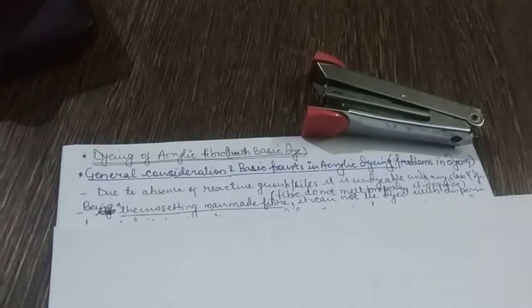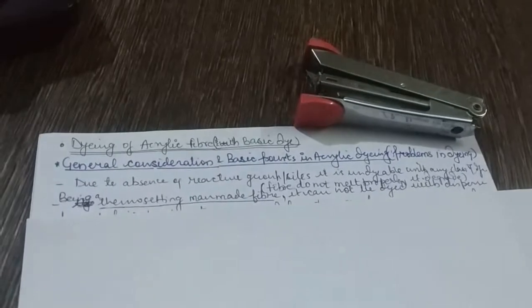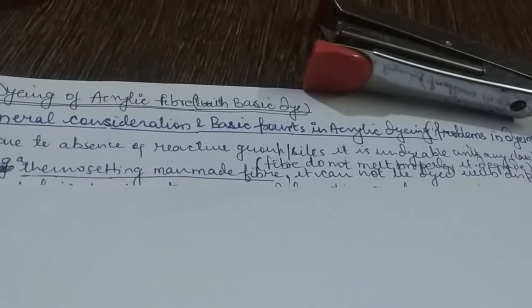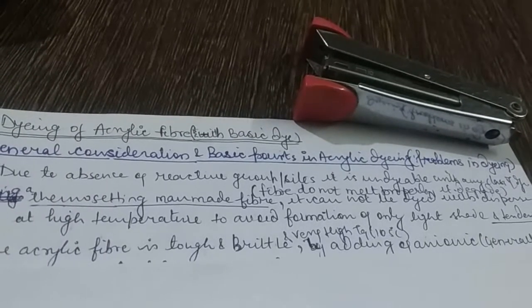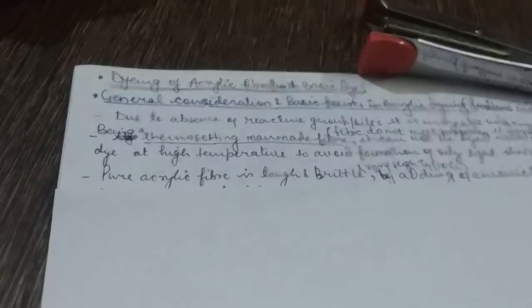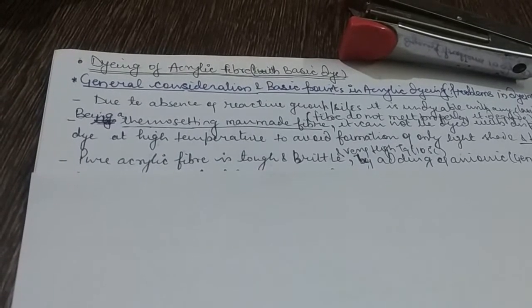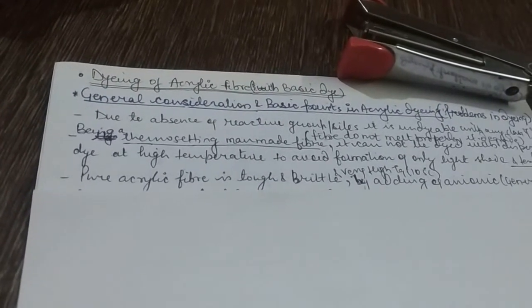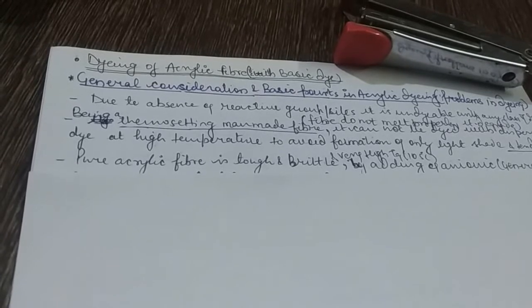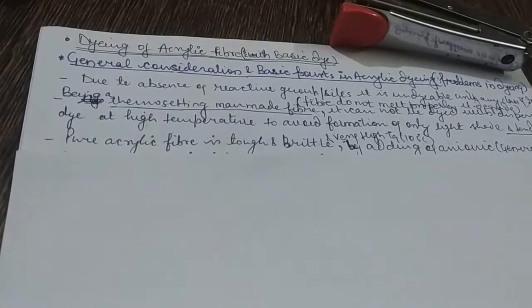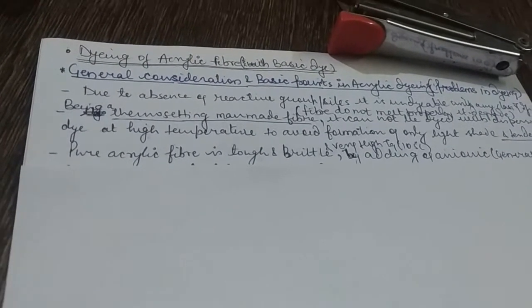Being a thermostatic man-made fiber means the fiber does not melt properly — it degrades when it comes into contact with heat. It cannot be dyed with disperse dye at high temperature to avoid formation of only light shades and tendering. Due to the thermosetting nature of acrylic fiber, it cannot be dyed with disperse dye because when in contact with heat, the fiber starts tendering and degrading. That's why dyeing via applying high temperature is not possible with acrylic fiber, especially for medium and dark shades.